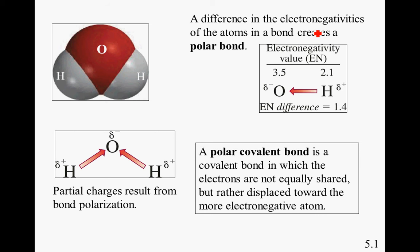Oxygen wants the electron more than the hydrogen does. Therefore, the electrons drift from the hydrogen to the oxygen. This creates what's called a polar bond. A polar bond is a covalent bond in which the electrons are not shared evenly, but rather displaced towards the more electronegative atom. This is creating a situation where the electrons are shifting from the hydrogen towards the oxygen.